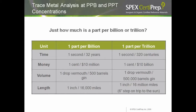Just how much is a part per billion or trillion? These terms are abstract. One second in 32 years is one part per billion; one second in 320 centuries is one part per trillion. One cent in $10 million is one part per billion; one cent in $10 billion is one part per trillion. One drop of vermouth in 500 barrels of gin is one part per billion; one drop in 500,000 barrels is one part per trillion. One inch in 16,000 miles is one part per trillion.